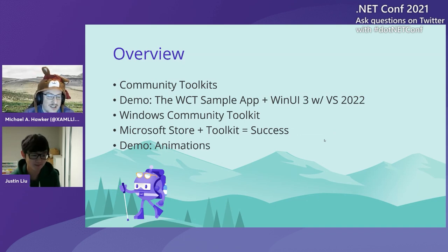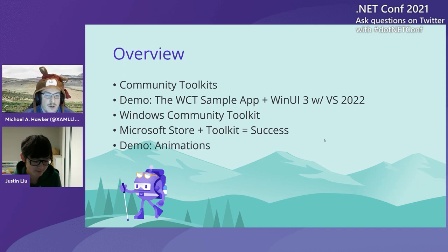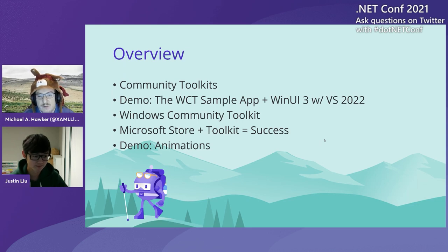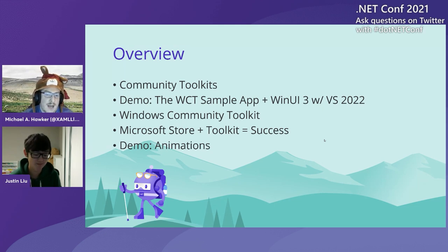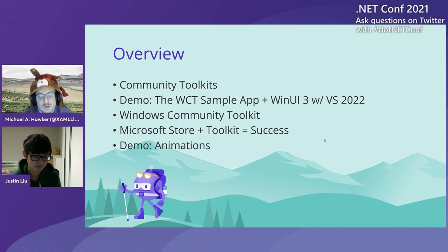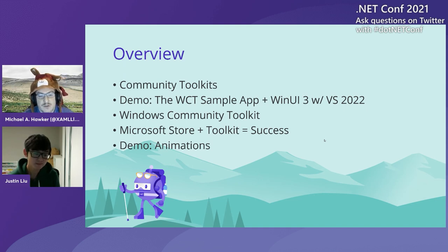So this is the overview for our slides and demos today. We're going to be talking a little bit about what the community toolkits are, but really jump right into a demo and show you the Windows Community Toolkit in action, so you can really understand the power that these toolkits give you when building applications. In this case, we're going to be building a WinUI 3 app in Visual Studio 2022 today. I'll talk a little bit more then about what the Windows Community Toolkit is. And Justin's going to share a story and tell you all about how the Microsoft Store app has been built with toolkit components and how we're working together moving forward to really see a lot of great success. And then finally end with some more demos and show some really cool animation stuff - so stick around to see that as well.